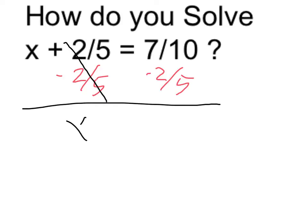So on the left, it cancels and leaves us with x. On the right, we get 7 tenths minus 2 fifths.